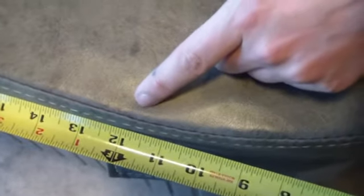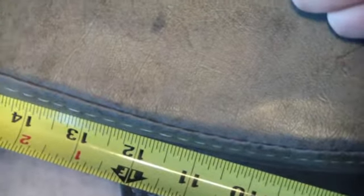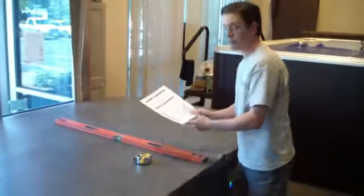So you can see here that the jet setter is right about 12 inches. Then you'll just want to take all of the information, all of those measurements, and add them here to the work order form.